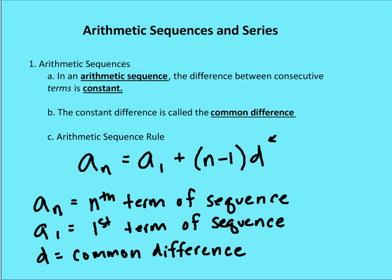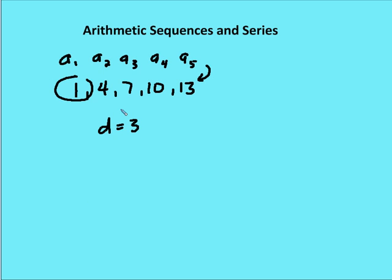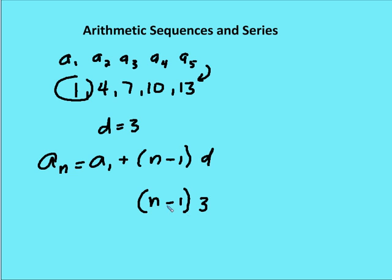So let's see if we can write a rule for this value here. Remember, it's a sub n is equal to the first term, plus n minus 1, times the common difference. Well, we figured out the common difference was 3, so we can write that in. And then we'll just write in n minus 1, because this will vary based on how many values we have in the sequence.